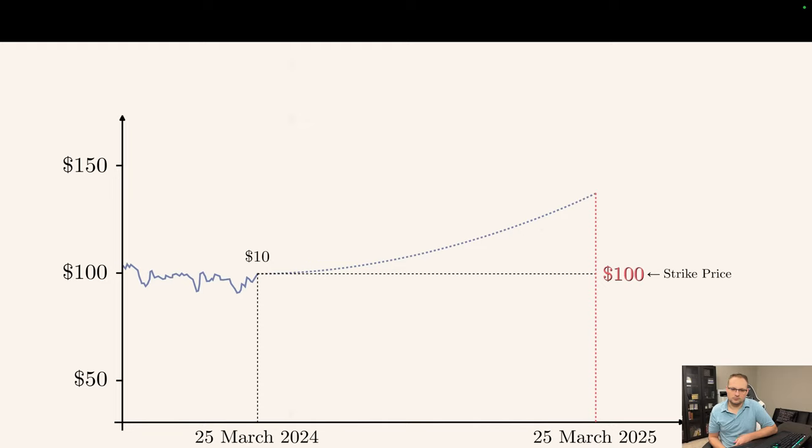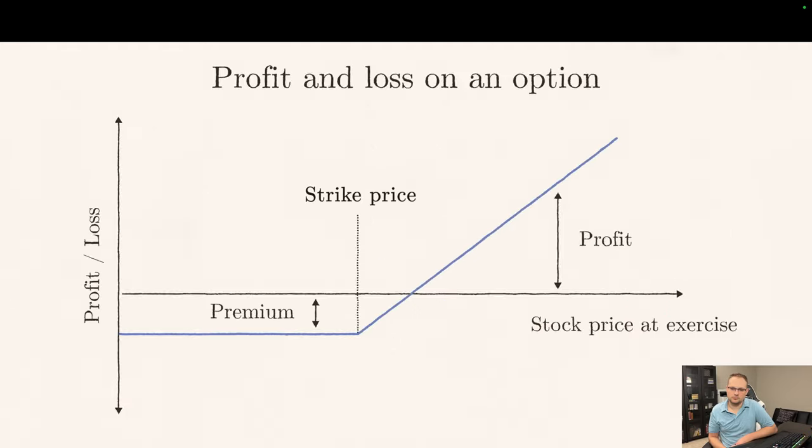So if in a year the price of Apple stock has gone up to $130, you can use the option to buy shares for $100 and then immediately sell them for $130. After you take into account the $10 you paid for the option, you've made a $20 profit. Alternatively, if in a year the stock price has dropped to $70, you just wouldn't use the option and you've lost the $10 you paid for it. So the profit and loss diagram looks like this. If the stock price ends up below the strike price, you lose what you paid for the option. But if the stock price is higher than the strike price, then you earn that difference minus the cost of the option.